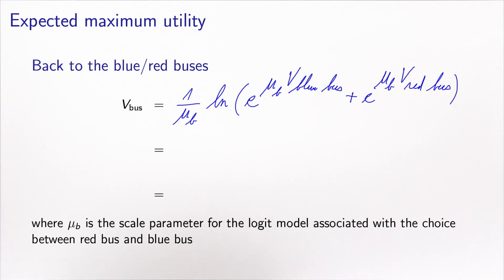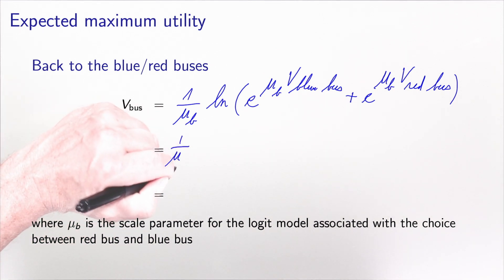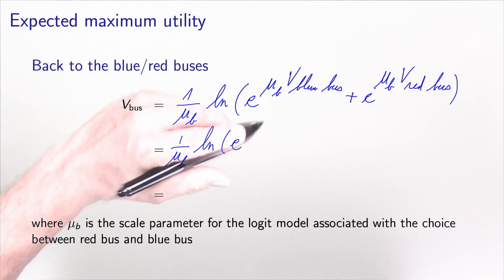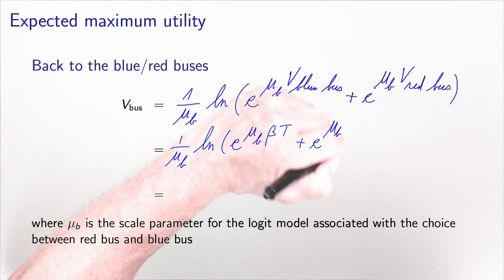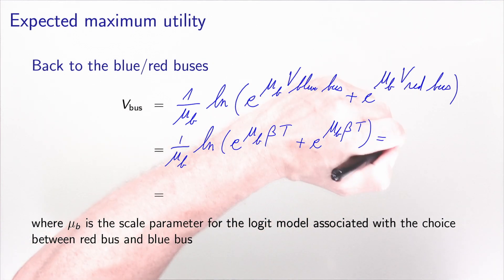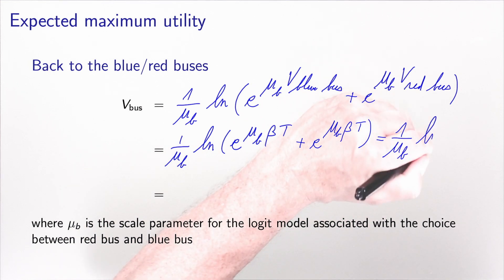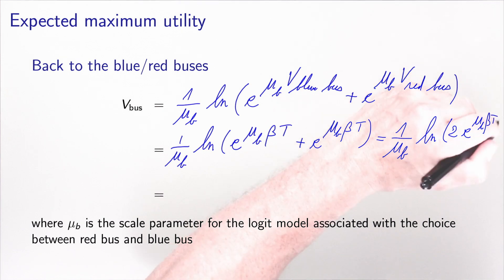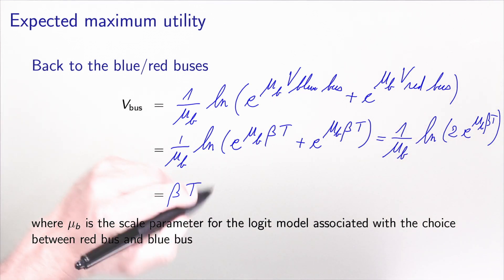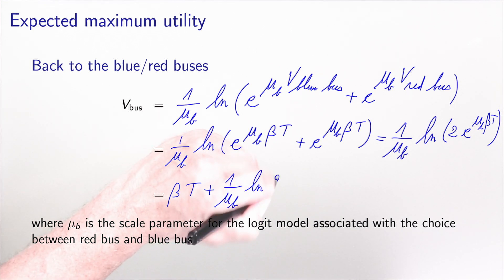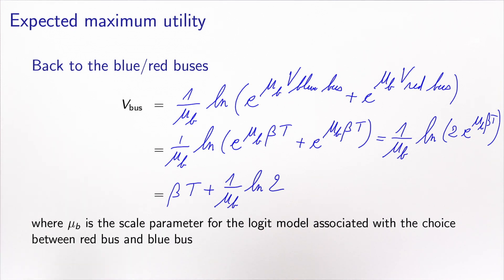Using the specification v_blue_bus = beta * t, we get: 1 divided by mu_b times log of (e to the mu_b * beta * t plus e to the mu_b * beta * t). The log and exponential cancel out, and we obtain beta * t plus 1 divided by mu_b times log of 2. Here mu_b is the scale parameter associated with the epsilon at the lower level for the logit model within the nest.